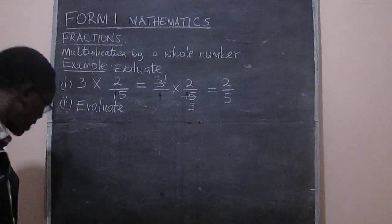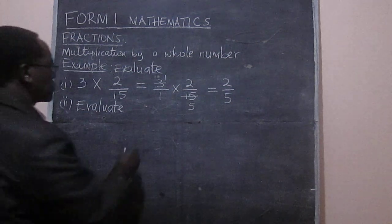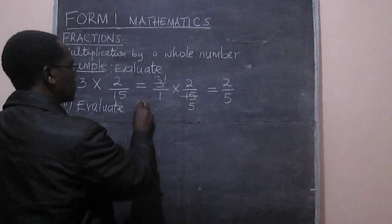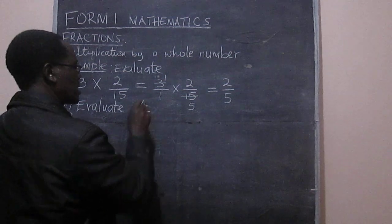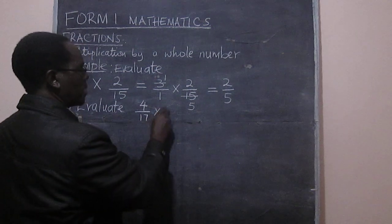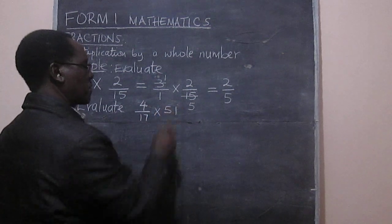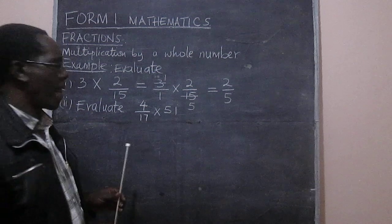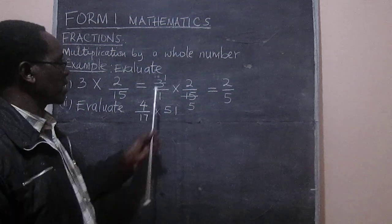And for the second example, we are going to have 4 over 17 multiplied by 51.